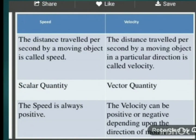Now we will see the difference between speed and velocity. Speed is the distance traveled by an object per unit time. Velocity is the distance traveled per unit time by a moving object in a particular direction. In speed we specify only magnitude, so speed is a scalar quantity. In velocity we specify both magnitude and direction, so it is a vector quantity.